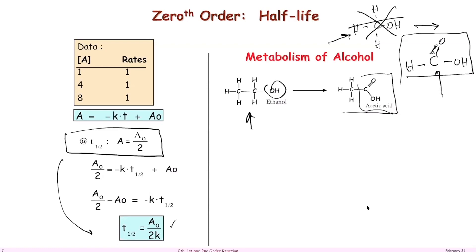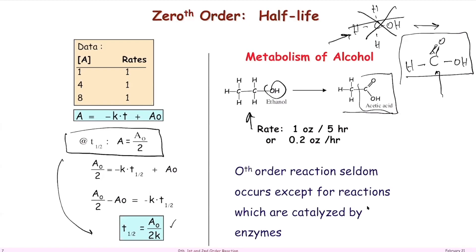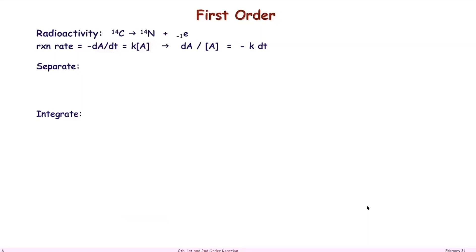So that's zeroth order kinetics. For a typical person weighing about 150 pounds, it takes about five hours to metabolize one ounce of alcohol — roughly 0.2 ounce per hour. This process is catalyzed by enzymes in your body.